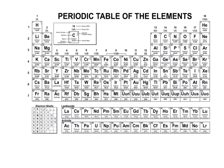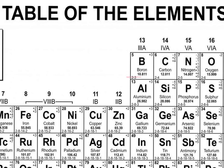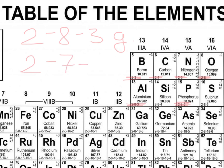Be aware that on the periodic table of elements provided on your exam, you are given the ground state electron configuration of every single element. For example, you can see that the ground state configuration for aluminum is two, eight, three. This is the ground state, so the excited state would most probably look like two, seven, four — that would be the excited state of aluminum.